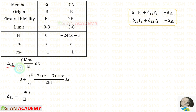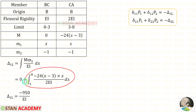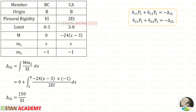Now let us find delta_1L. The formula is the integration of m·m1 divided by EI dx. For BC, the value of M is 0, so no integration is needed and we directly apply 0. For CA, the limit is 3 to 8 and the flexural rigidity is 2EI. After applying the values of M and m1 and integrating, we get minus 950 upon EI. For delta_2L, the formula is integration of m·m2 upon EI dx. Applying the values, we get 150 upon EI.